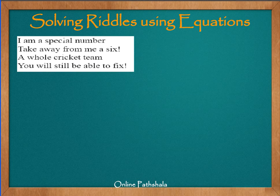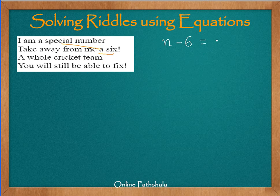Now let us look at the next riddle: 'I am a special number. Take away from me a 6. A whole cricket team, you will still be able to fix.' So let us say that the number is n. We subtract 6 from this number, and we should get a number equal to the number of team members in a cricket team, which is 11. We all know there are 11 members in a cricket team. So n minus 6 equals 11.